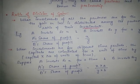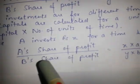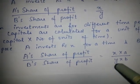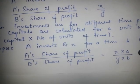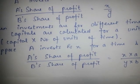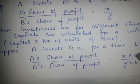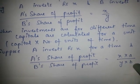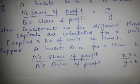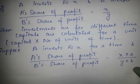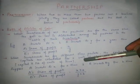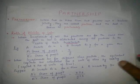For the second rule, when partners invest for different time periods, A's share of profit is proportional to the product of A's investment and the time period of A's investment. We only need to focus on these two rules when solving partnership problems.